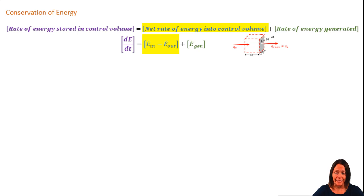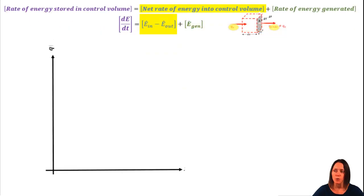Now let's look at the net rate of energy into the control volume. That's Q at some location x minus the Q at some location x plus dx. And we need to figure out how those two terms are related to one another. So let's draw Q as a function of x.